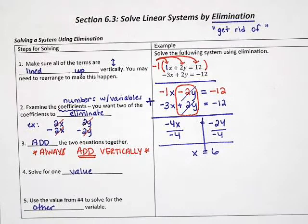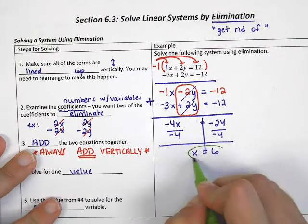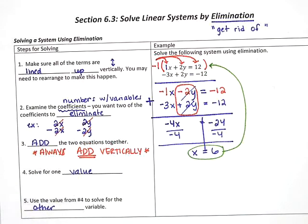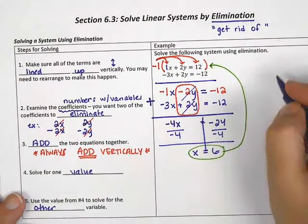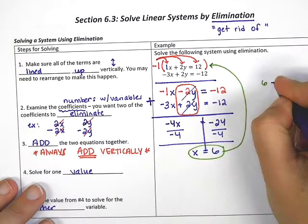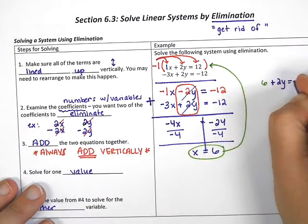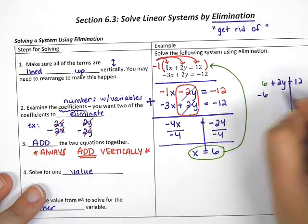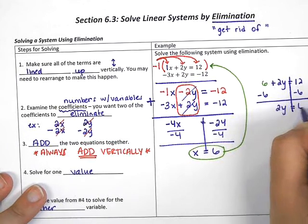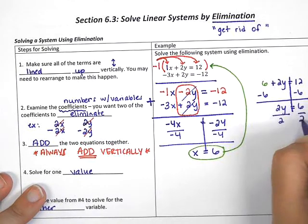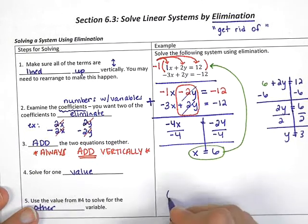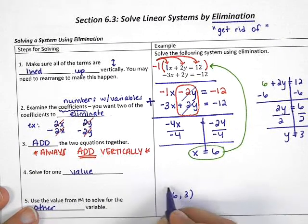Now all we do is take this 6 and plug it in to the first original equation — that means before you multiply it by anything. So instead of x, we have 6 plus 2y equals 12. We subtract the 6 and have 2y equals 6, then divide by 2, so y equals 3. The final answer is (6, 3).